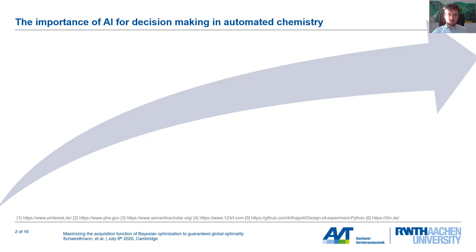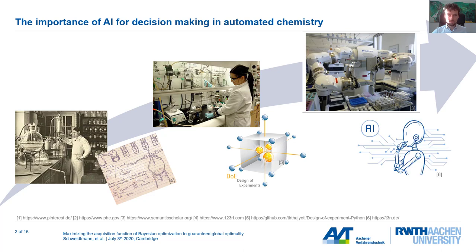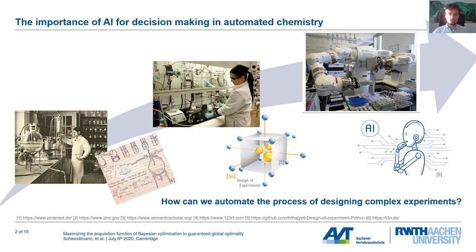In recent years, we've seen a development from manually conducting chemical experiments to machine-assisted chemical experiments towards a full automation of conducting chemical experiments. And at the same time, the way how we design and plan chemical experiments has changed from manually planning to DOE methods. Now that we have full automation of chemical experiments, we also need to think about how we can automate the process of designing chemical experiments, and one promising method for that is artificial intelligence.